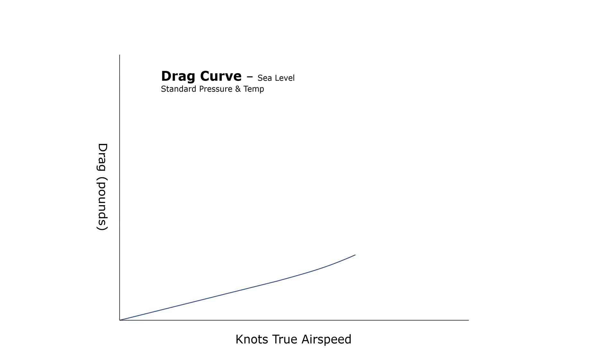So we can graph this relationship on a drag curve, with our true airspeed in knots on the horizontal, and the drag force in pounds on the vertical. As our speed increases, our parasite drag increases, so our curve looks like this. Notice the dramatic increases as we really pick up speed.